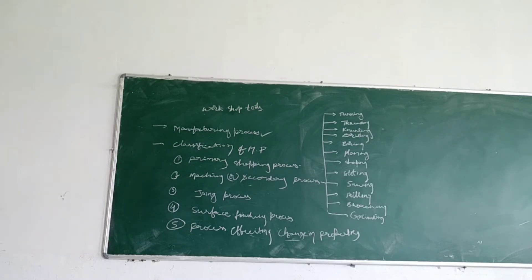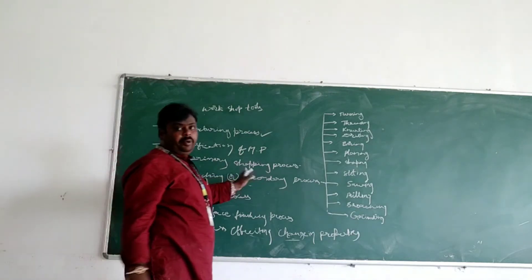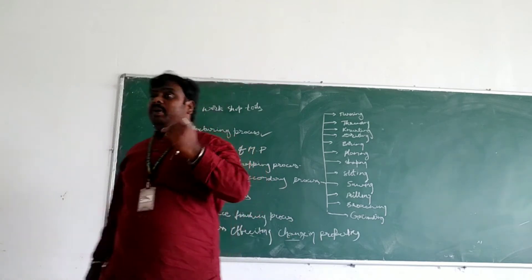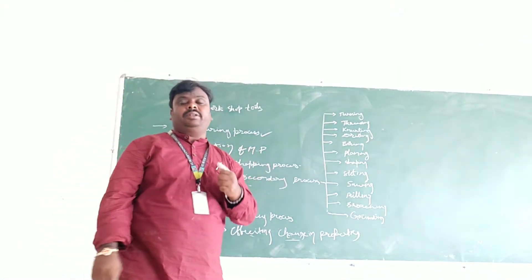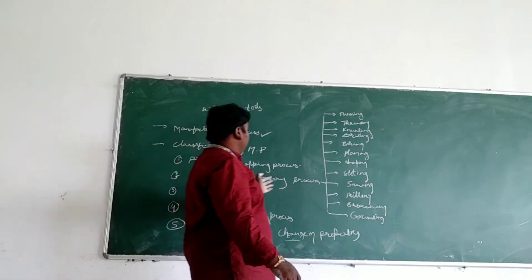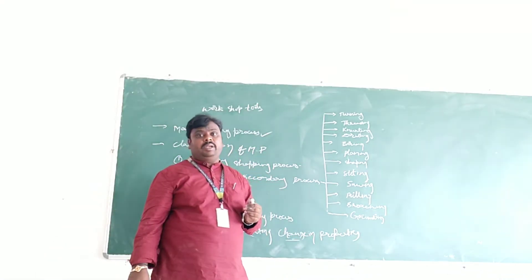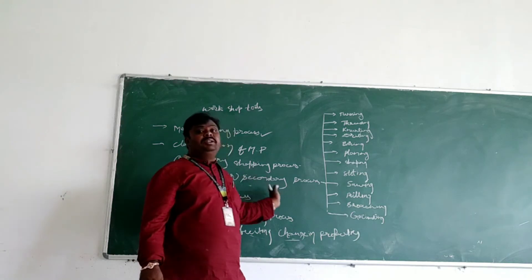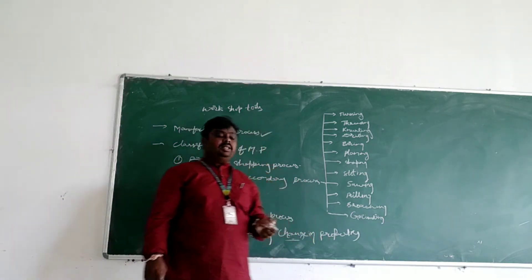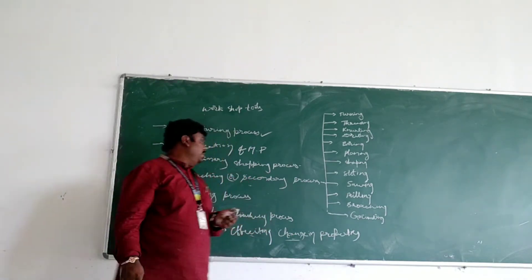Secondary process is nothing but you are having machining or secondary process. Machine is nothing but with the help of the mechanical machines. Now you are having machine process - you are having the secondary process. Semi-finished work converted into finished work - that is nothing but the machining or secondary process.